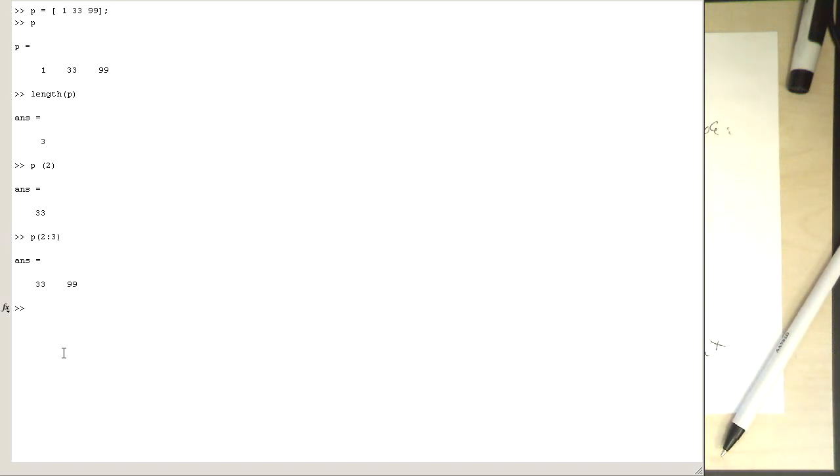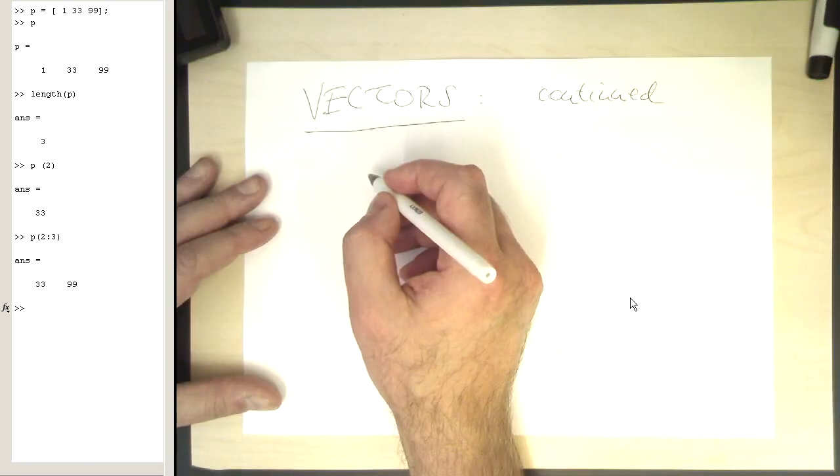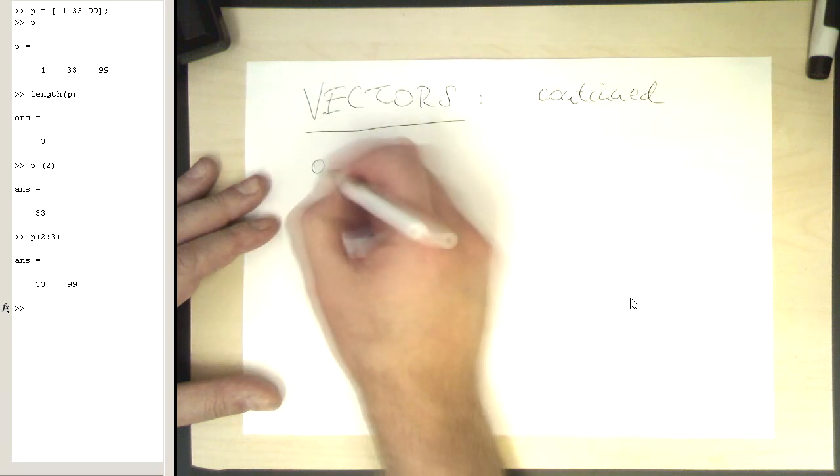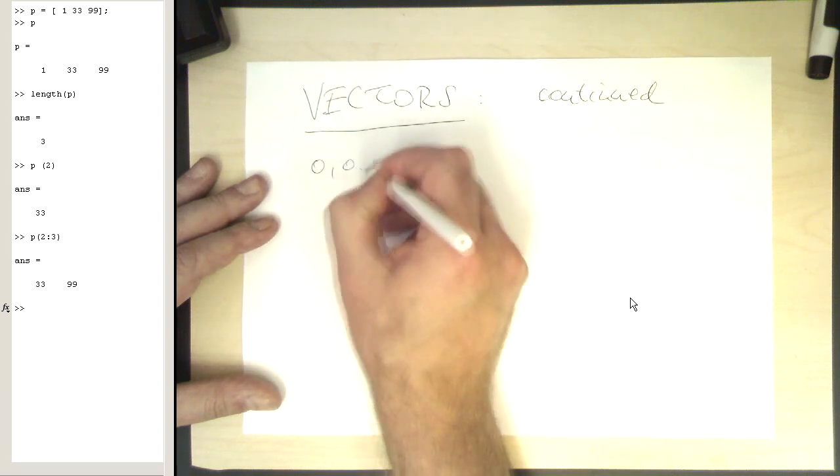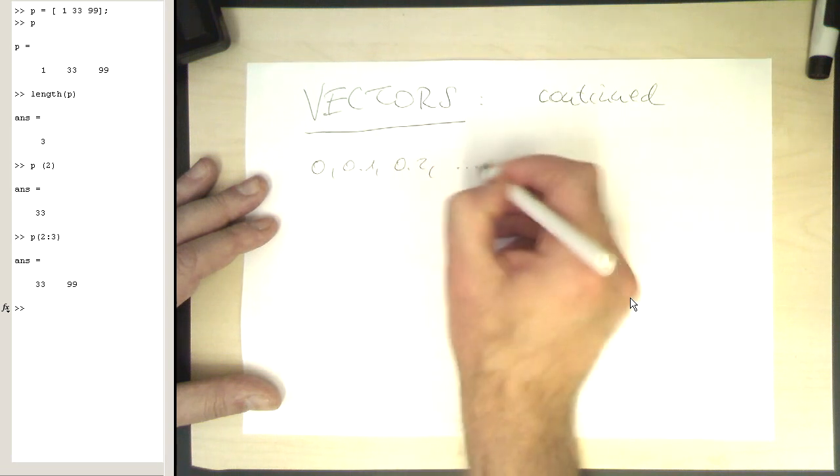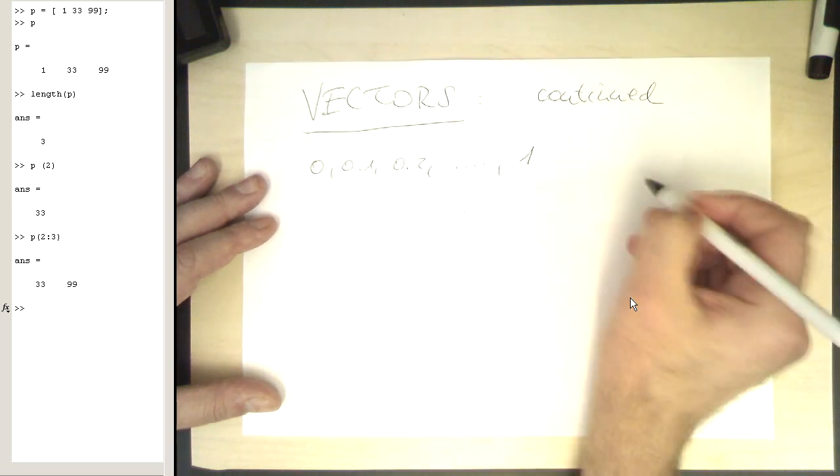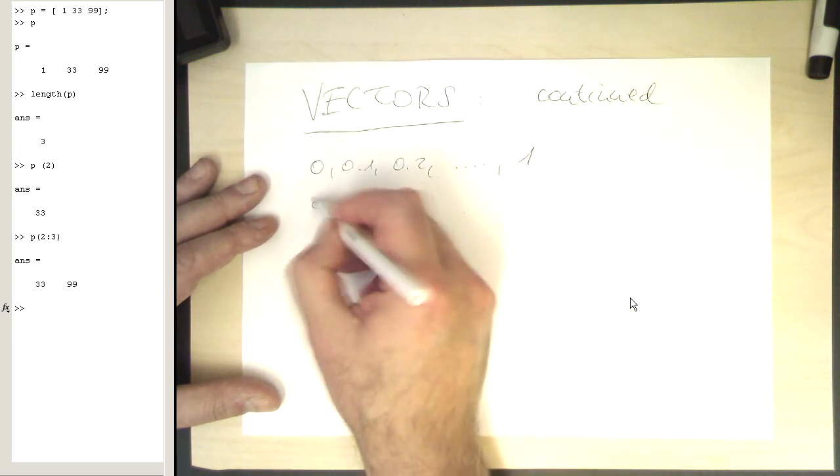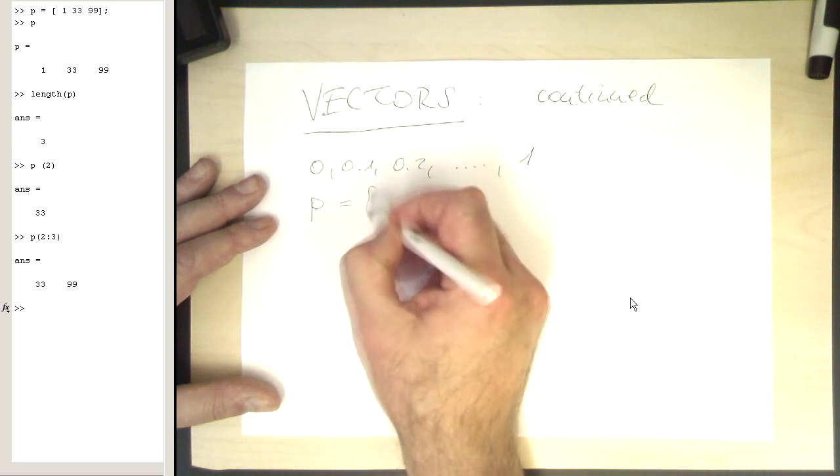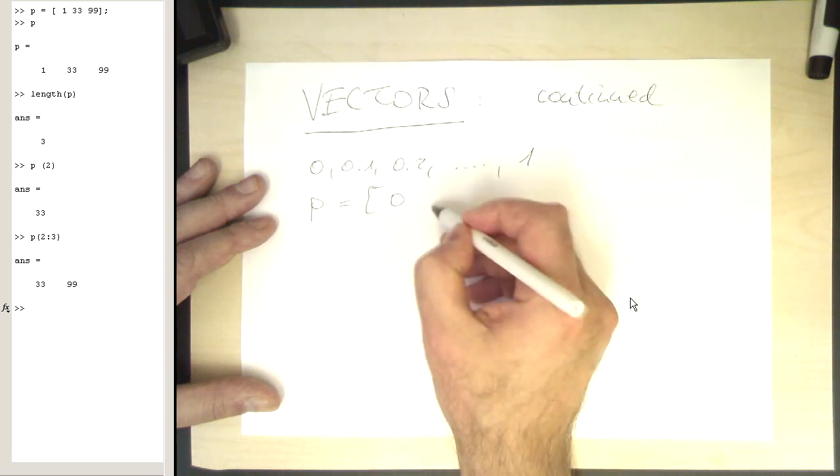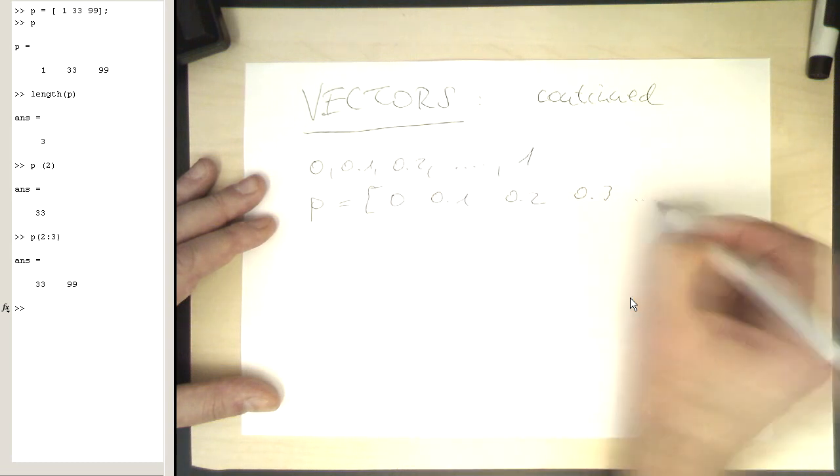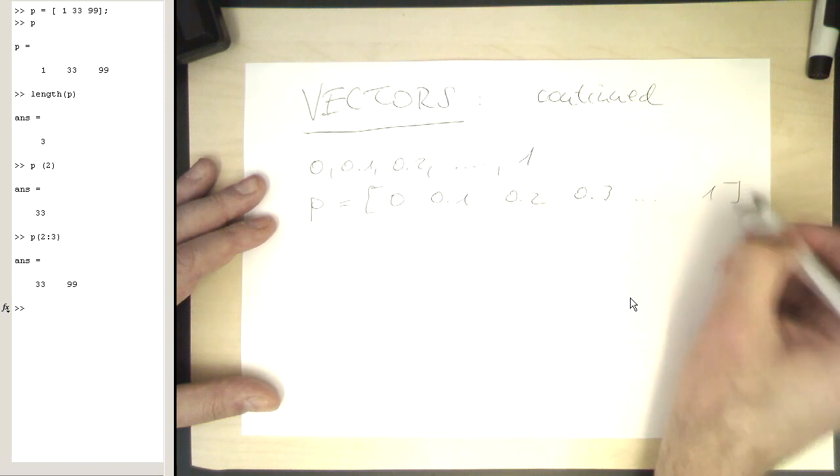So how about creating a vector with equally spaced elements. We would like to create a vector which looks like 0, 0.1, 0.2, and so on. Now obviously a very stupid way of doing this is basically writing 0, 0.1, 0.2, 0.3, and so on, and writing this up to 1.